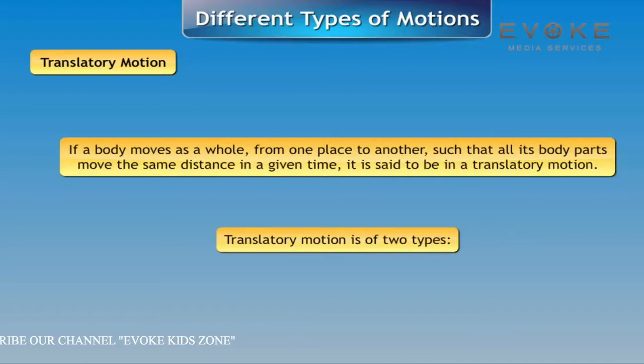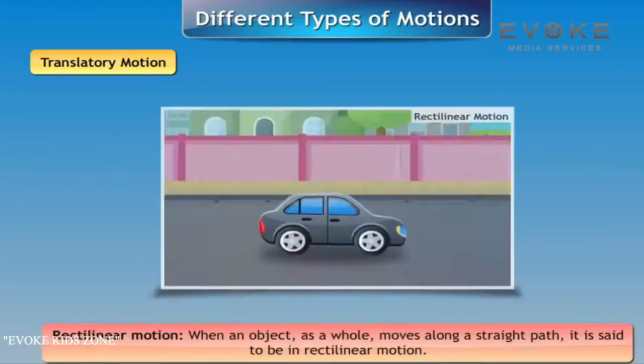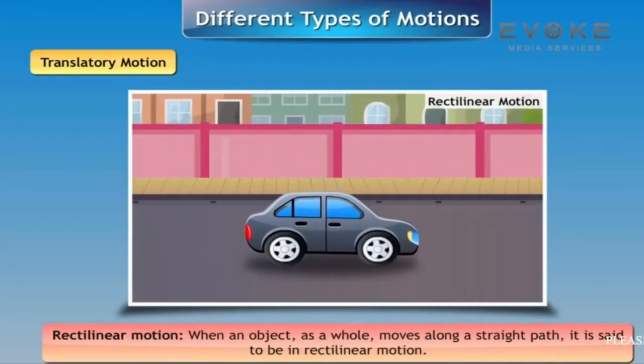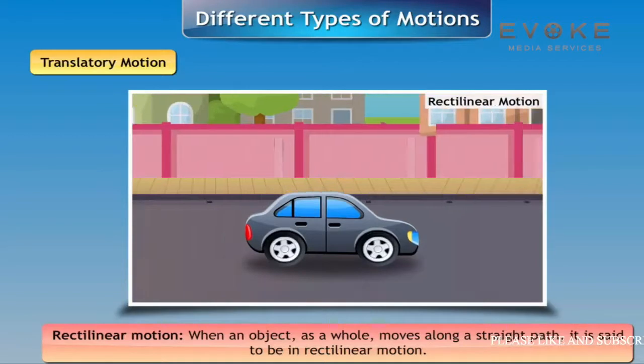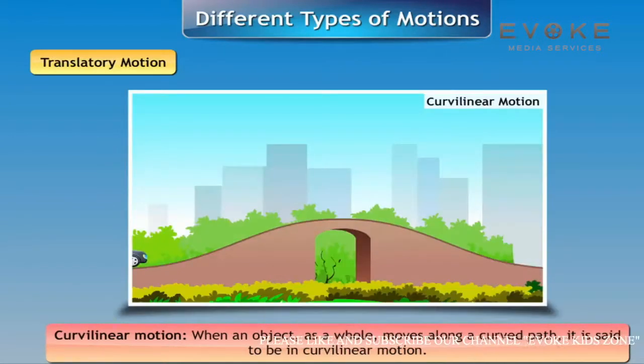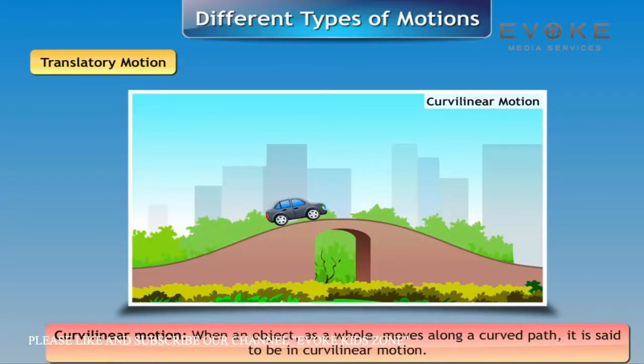Translatory motion is of two types: Rectilinear motion - when an object as a whole moves along a straight path. Curvilinear motion - when an object as a whole moves along a curved path.